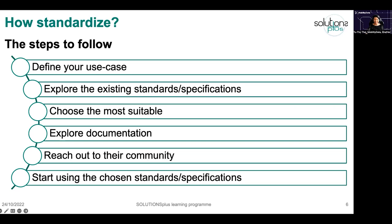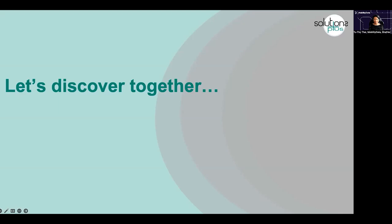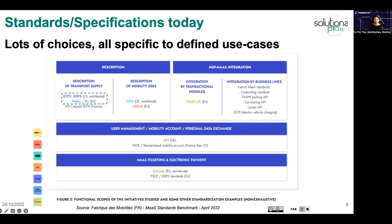Now that we've discussed why it's important to standardize, let's talk about the different standards out there — the most used for mobility services. This is a survey made by the French Fabrique des Mobilités earlier this year, where they took the most global lens possible for mobility services and tried to identify what existing specifications and standards exist. You can see there are a lot of choices, all very specific to defined use cases — some for the description of transport services, and some going further into ticketing or electronic payment.